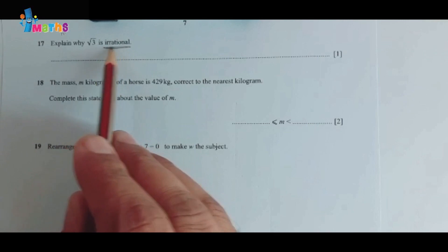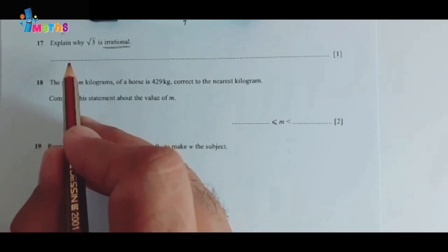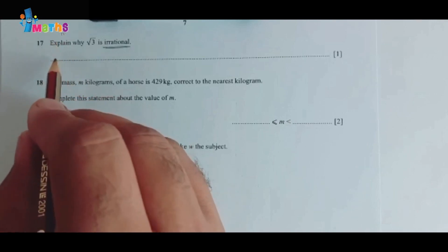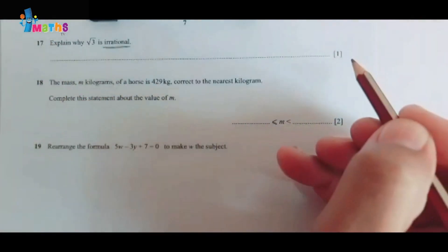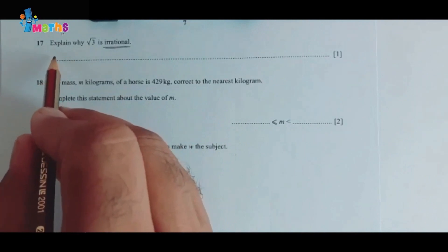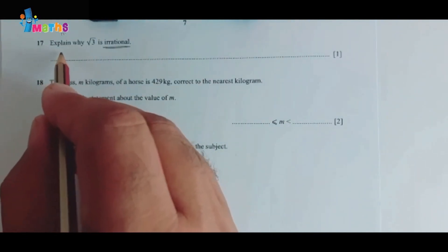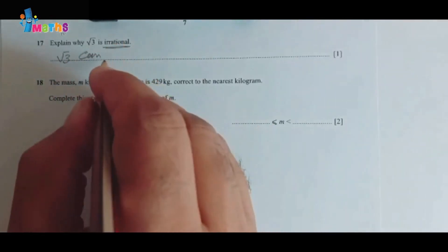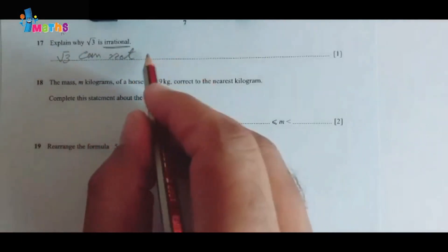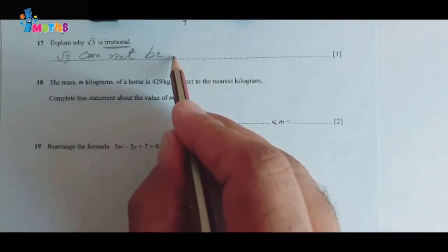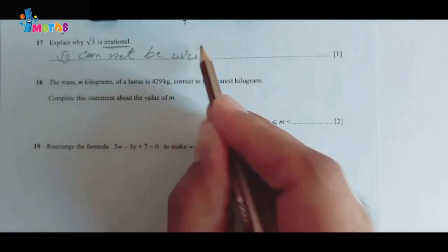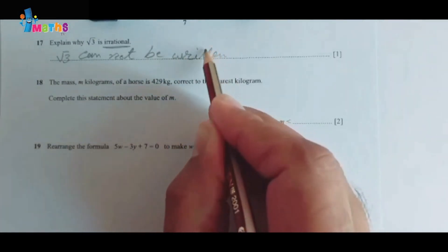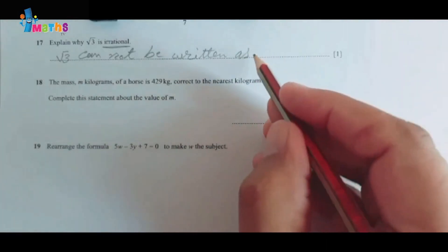Question number seventeen: explain why the square root of 3 is irrational. Irrational numbers are numbers which cannot be written in fraction form — p over q form. So we write the answer: the square root of 3 cannot be written as a fraction. This is a one-mark question so not a lot of working is required.